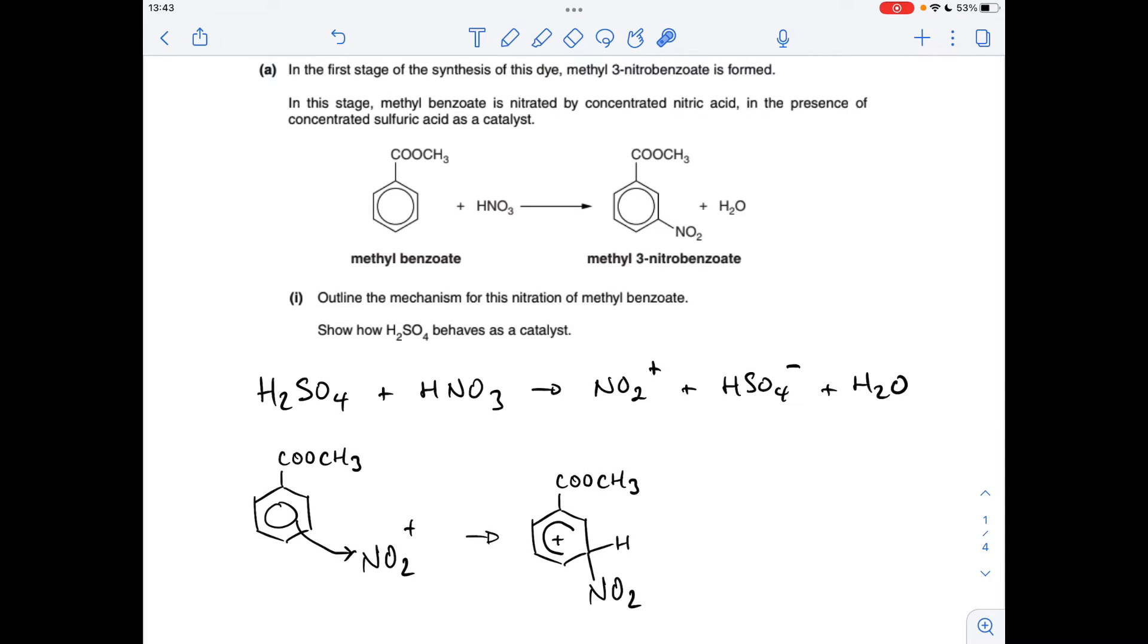So the next part of the mechanism is the reaction between the methyl benzoate and the electrophile, this nitronium ion. We take a pair of electrons from the delocalised pi electrons out to the nitrogen of the electrophile, and that generates this intermediate. We show the hydrogen now - it was already there but we show it now for the next part of the mechanism.